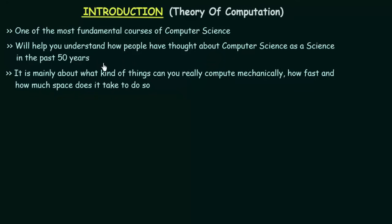So what does this mean and what is it really about? This subject is mainly about what kind of things can you really compute mechanically, how fast can you do it, and how much space does it take to do so. We know that in Computer Science there are certain kinds of problems that a computer or a machine can solve, and also there are certain kinds of problems that a machine cannot solve. We shall be seeing all these kinds of things in this subject.